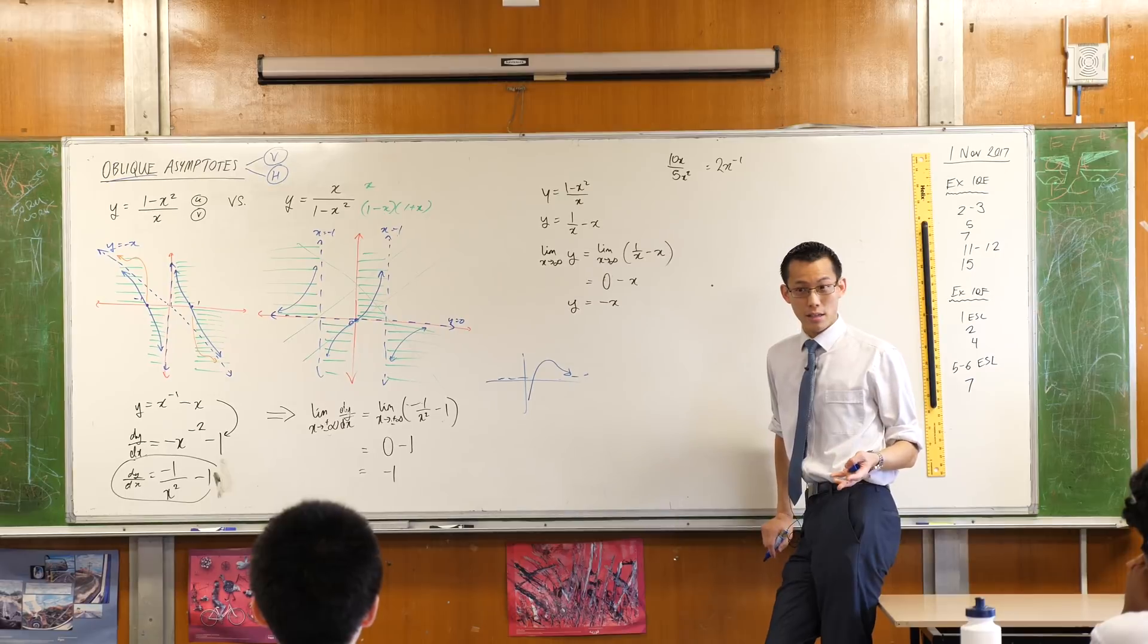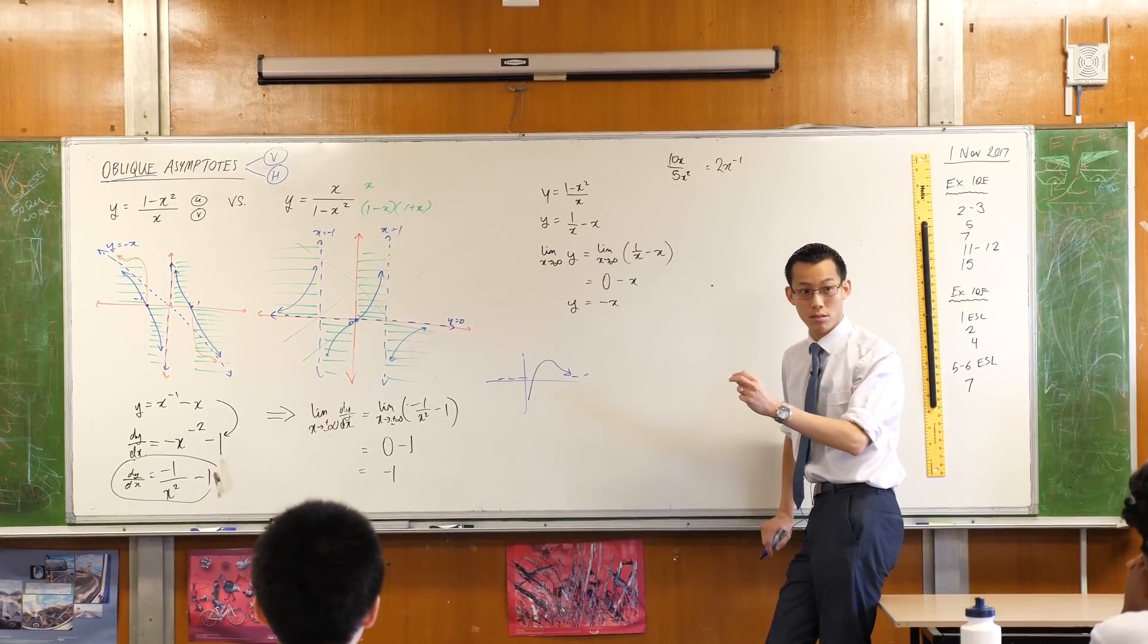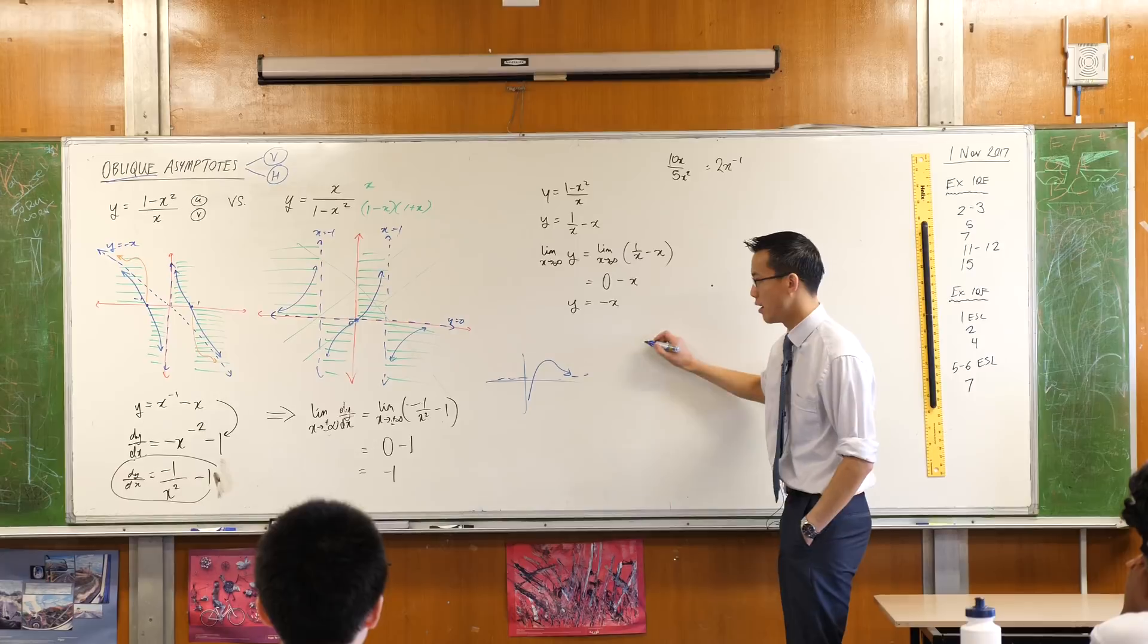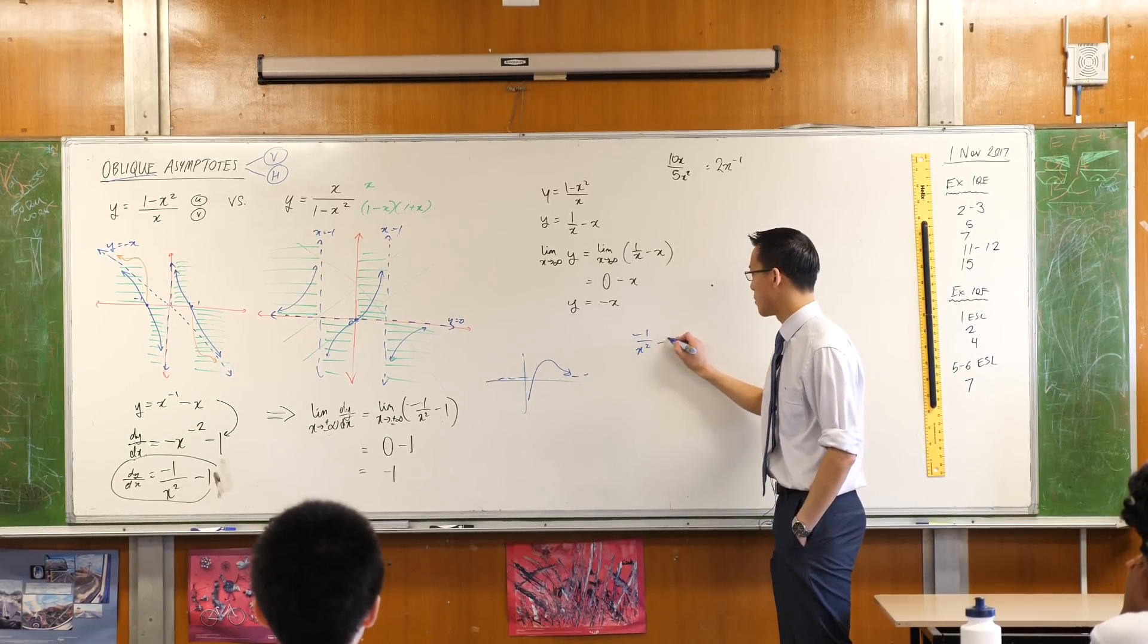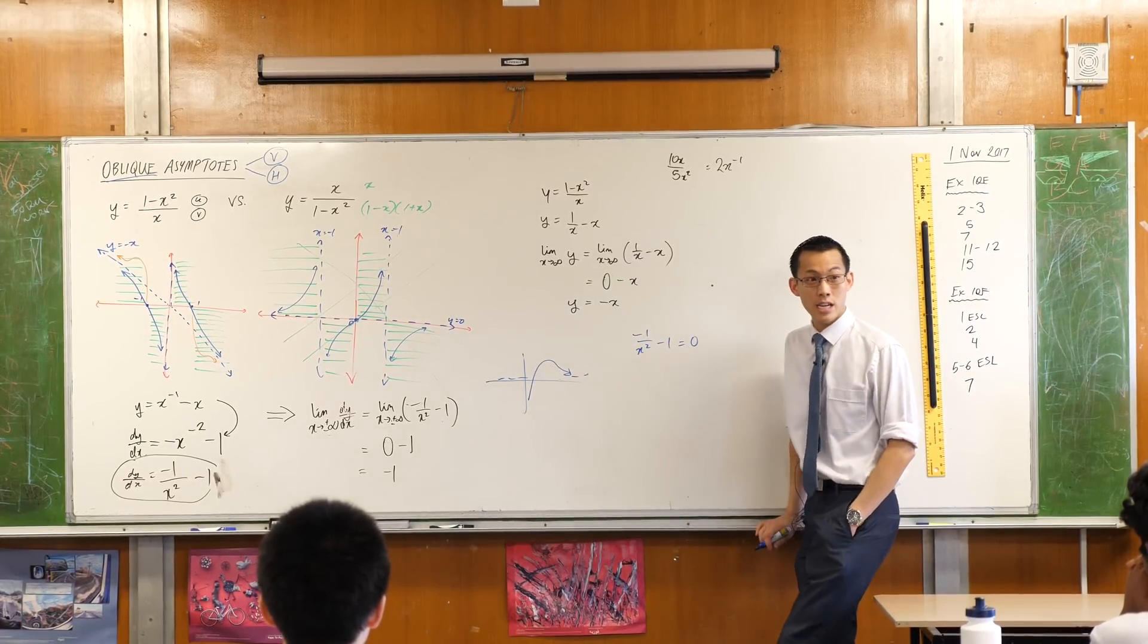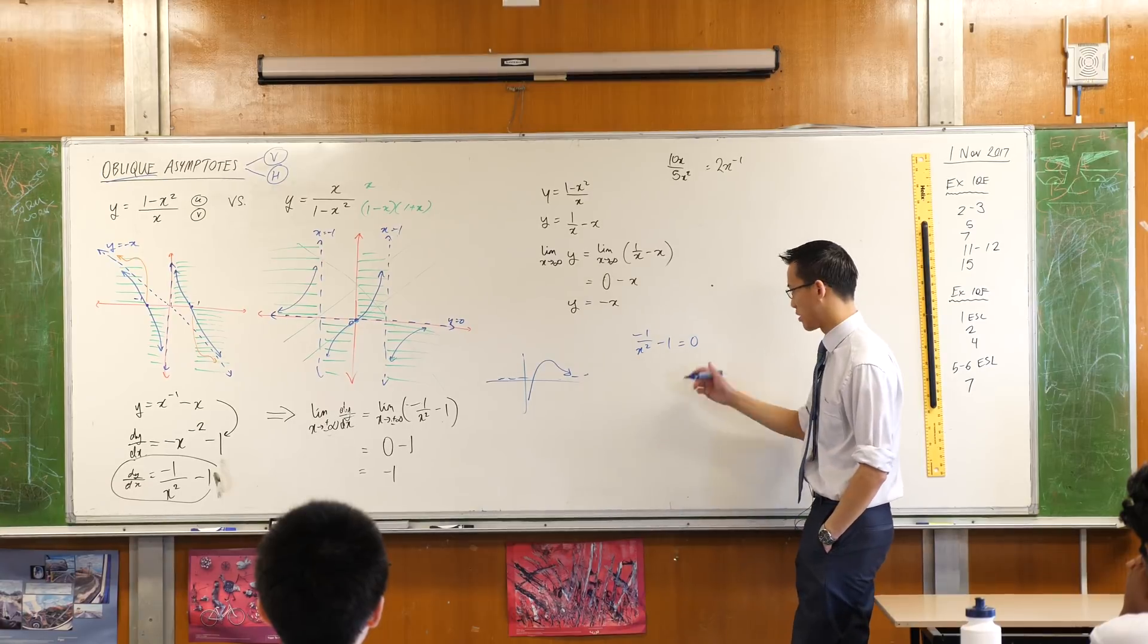I would say the first derivative should be 0, right? Well, let's see what happens. I have the first derivative. It's over there. Minus 1 over x squared minus 1 equals 0, yeah? So let's see what happens.